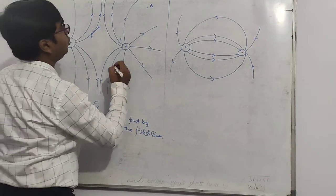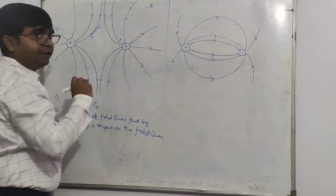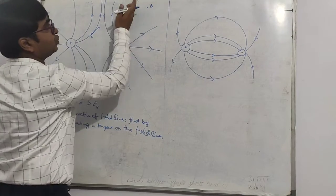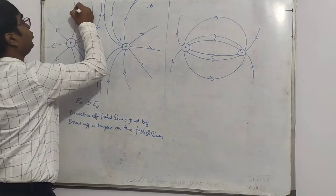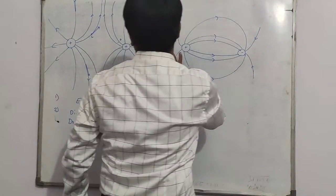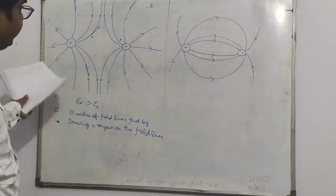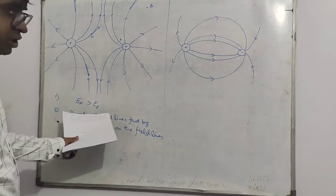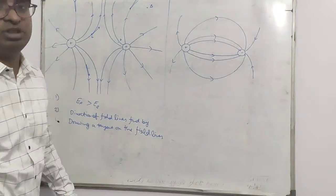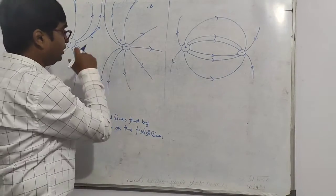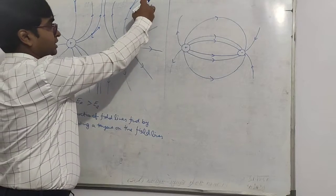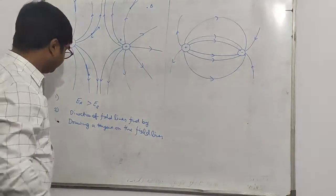If we want to find the electric field direction at a point, we draw a tangent on the field lines. The arrow on the tangent represents the direction at that point. This is how you find direction — by drawing a tangent on the field lines. For magnitude, where the number of field lines crossing through the unit area is larger, the magnitude is higher; where fewer lines cross, the magnitude is less.